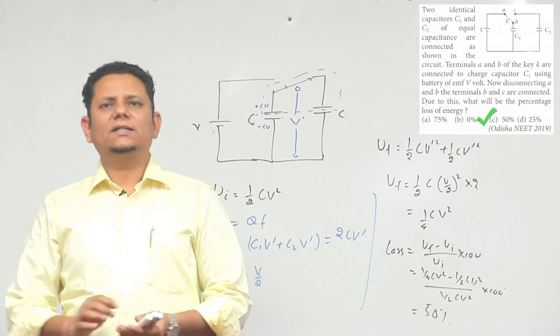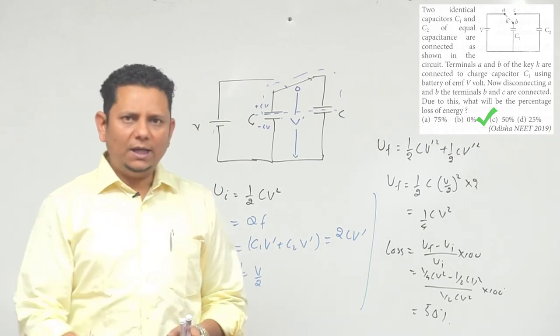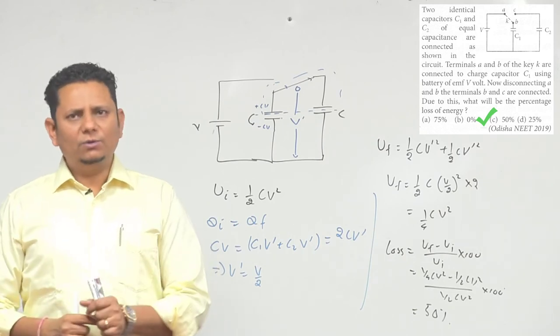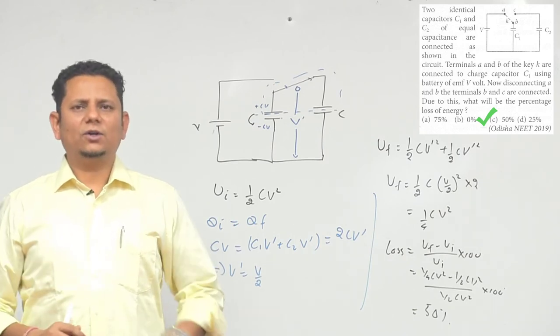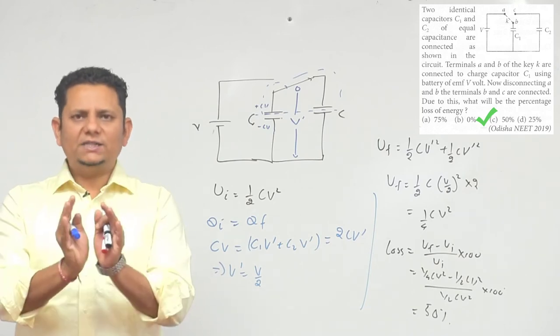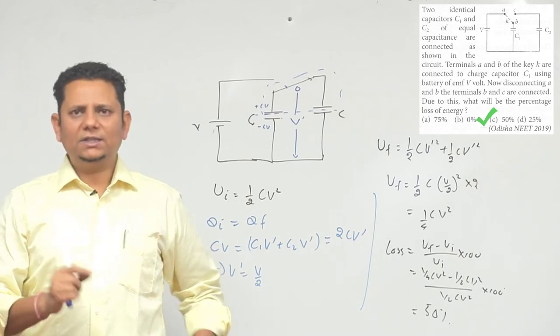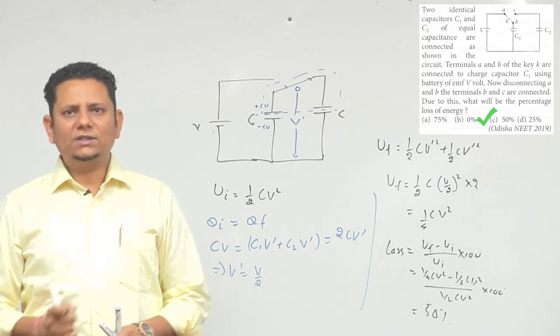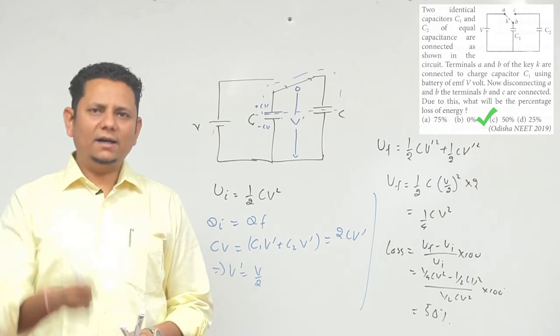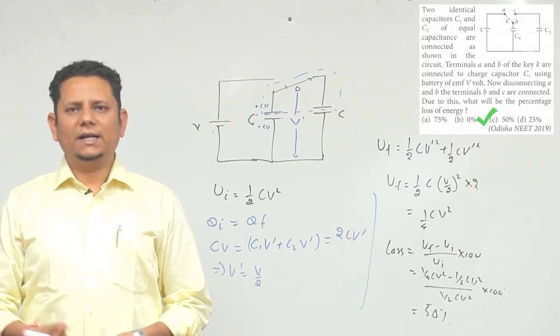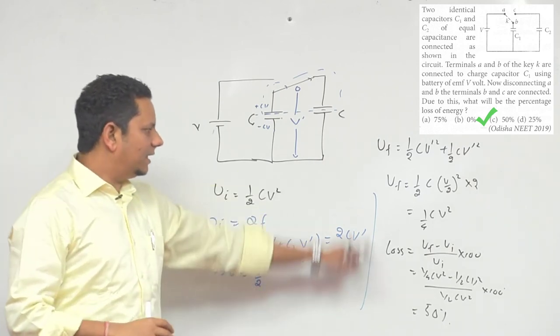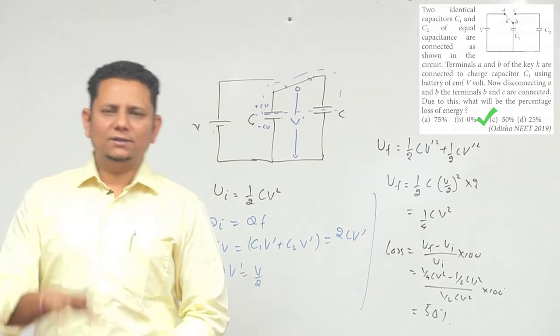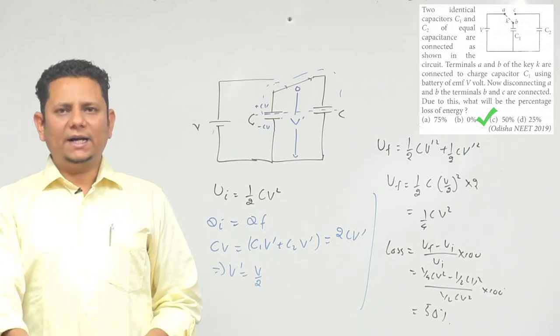Some people suggest formulas or short tricks that can apply here, but usually I avoid such formulas that are specific to one question type. If the question has a twist or different situation, we won't be able to solve it. But if you know how to calculate initial energy and final energy like this, you'll always get the right answer. So based on this, option C would be the right answer.